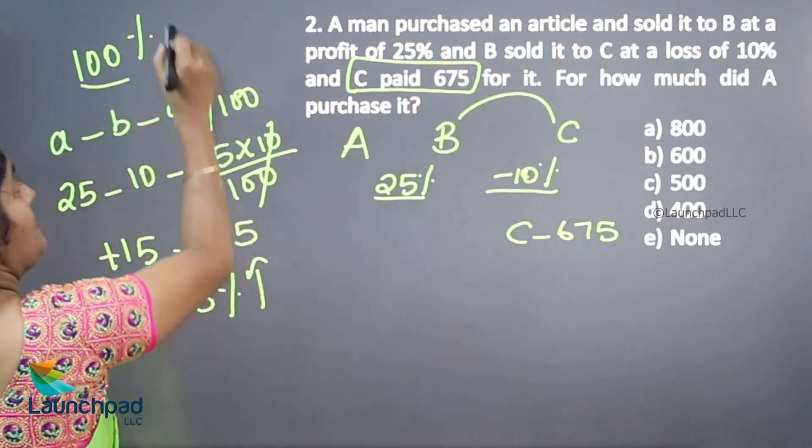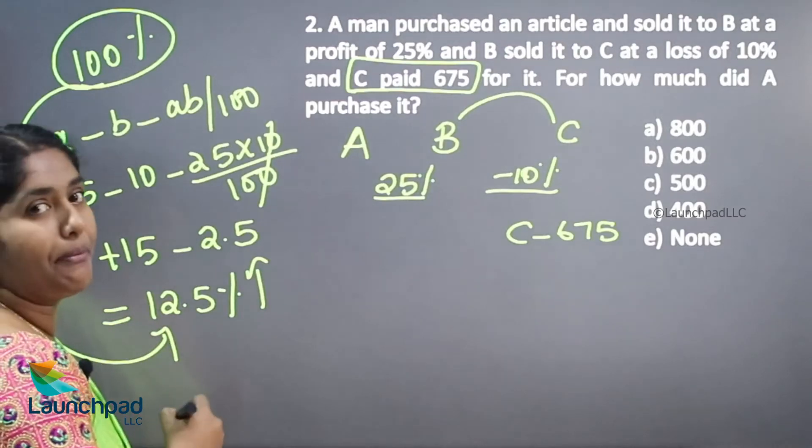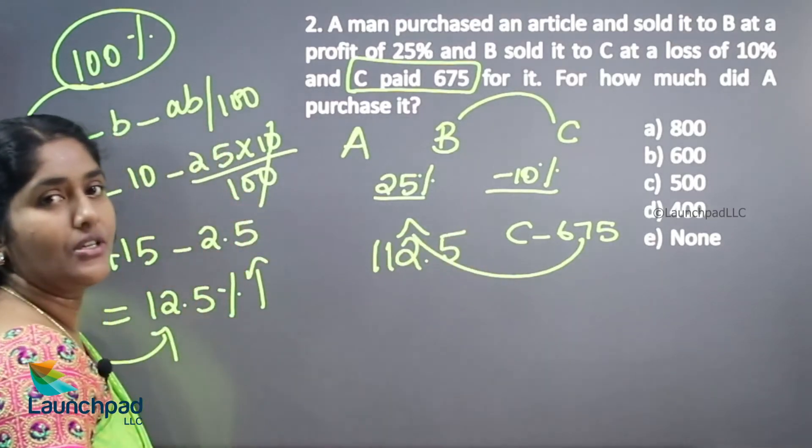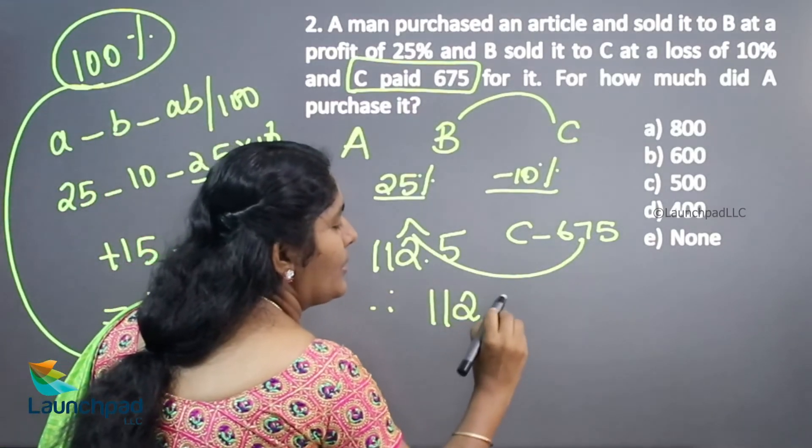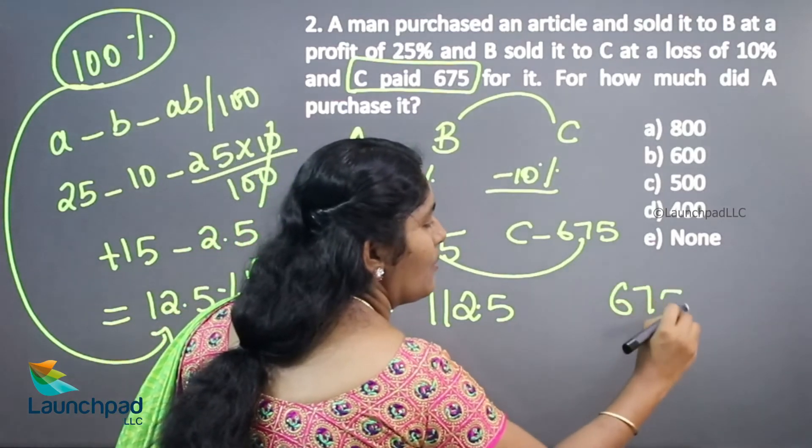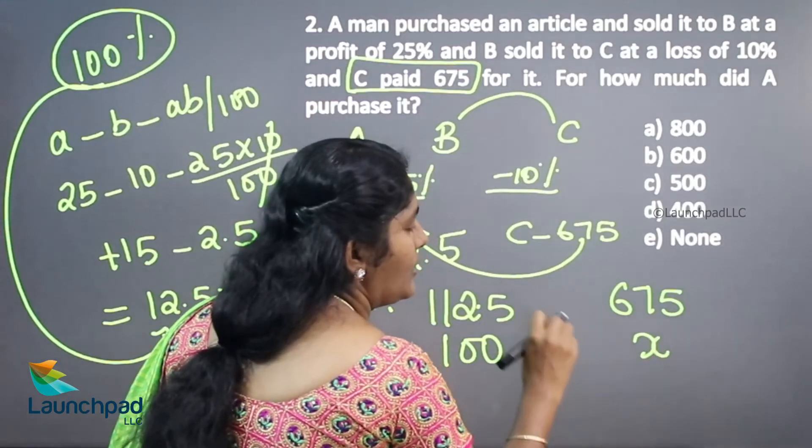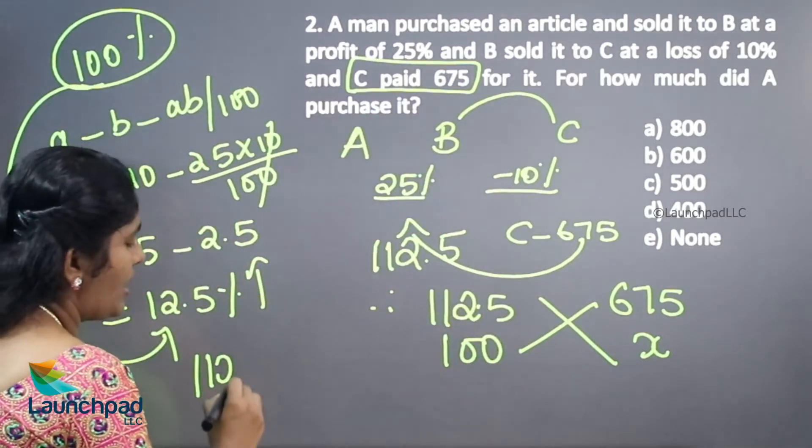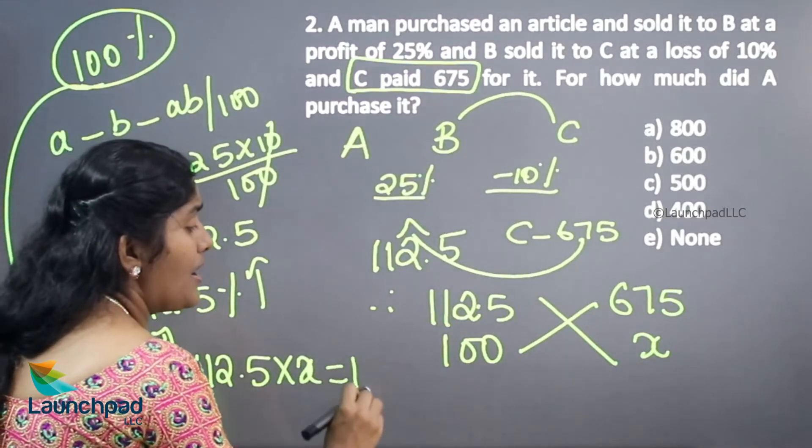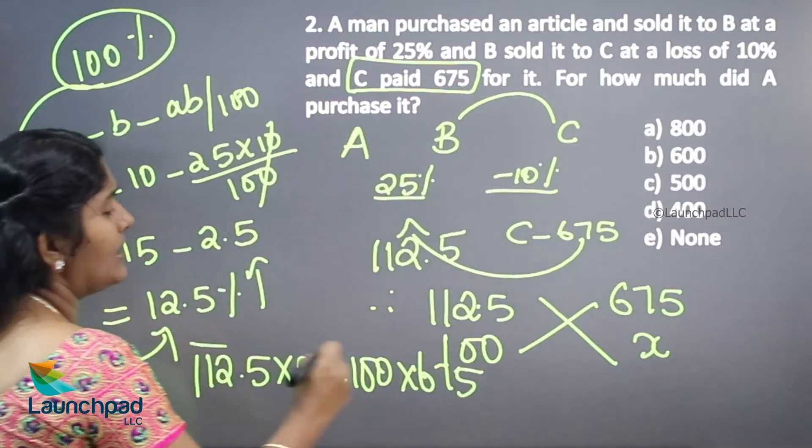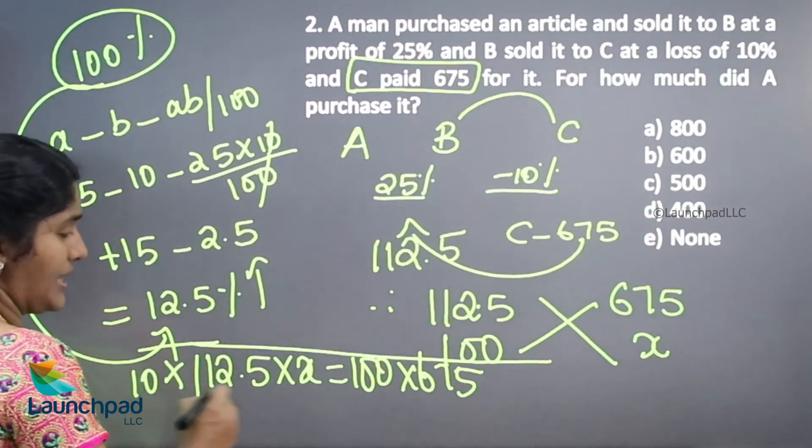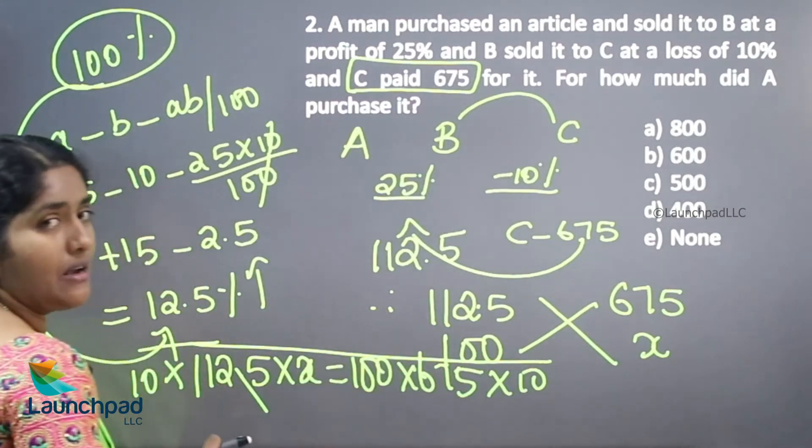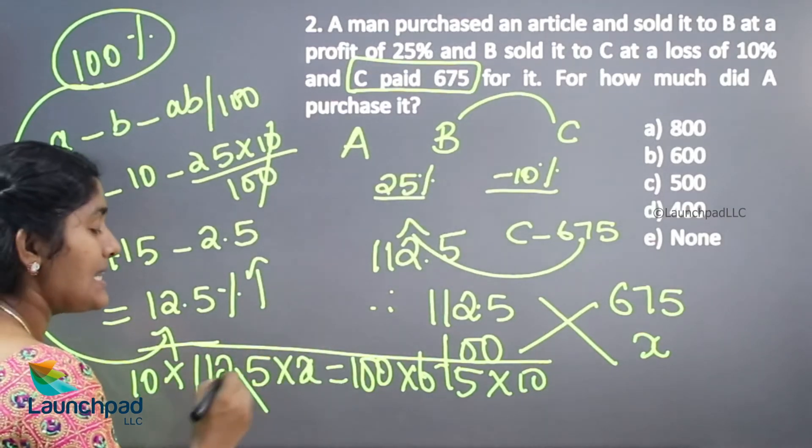So now the initial 100% is increased by 12.5%. Your answer for the 675 is 112.5%. So therefore 112.5% is 675. What is your 100%? While doing the cross multiplication, we can be able to find out the initial amount. That is A is paying amount is 100%. 112.5 into X is equal to 100 into 675. So here I am multiplying both right and left hand side by 10. So if it is 10, the decimal value will be removed. So here 10 will be appearing because there is no decimal value. Then we will cancel it by 5.